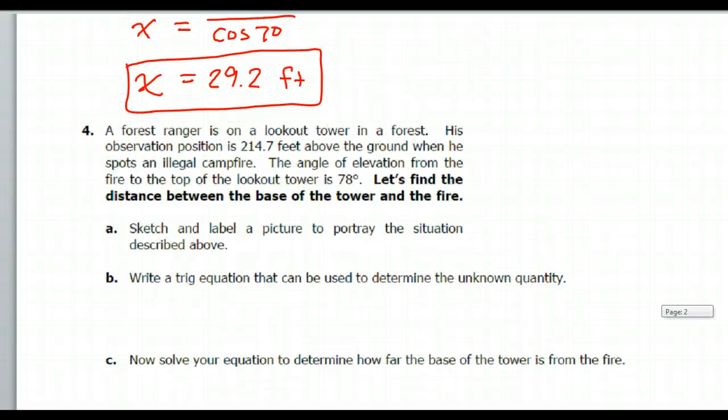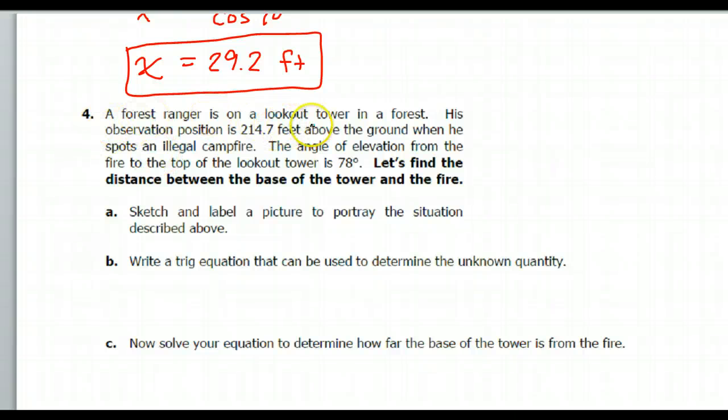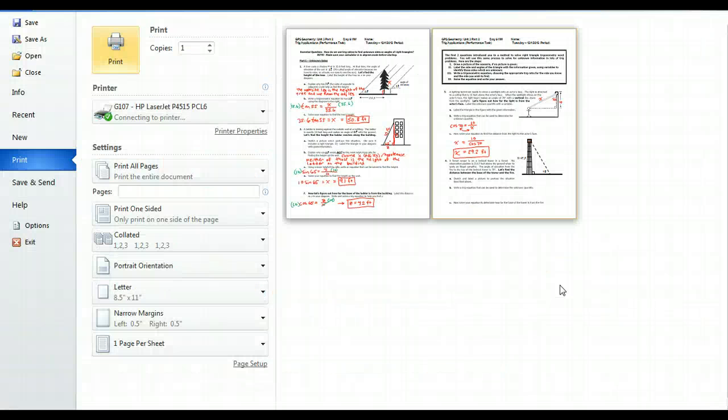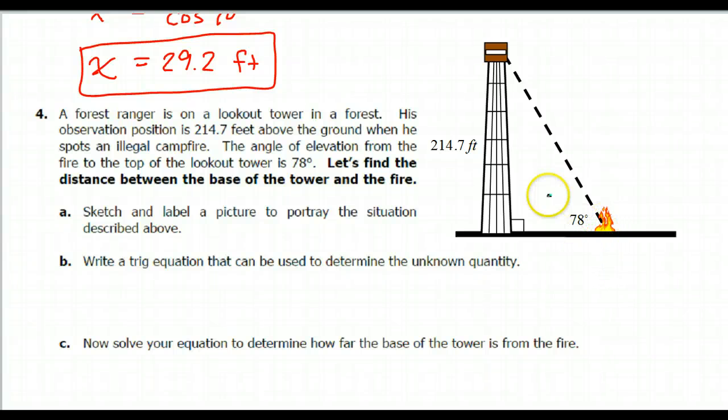We're almost to the end of this assignment. Shortest assignment ever. A forest ranger is on a lookout tower in a forest. His observation post is 214.7 feet above the ground. So that's the height of this lookout tower. When he spots an illegal campfire, the angle of elevation from the fire to the top of the lookout tower is 78 degrees. So this should be a fire down here. There's my fire, 78 degrees angle of elevation. Sketch and label a picture to portray the situation. We've done that.